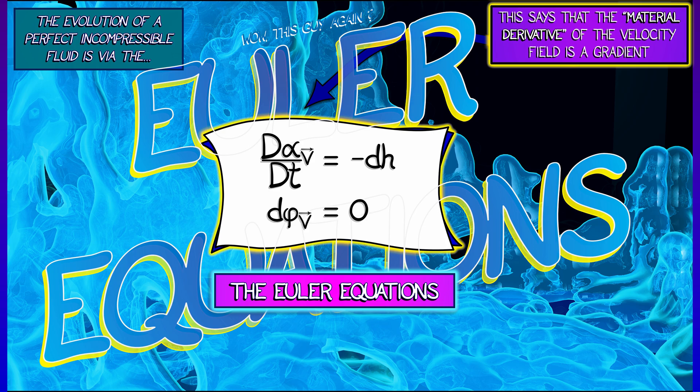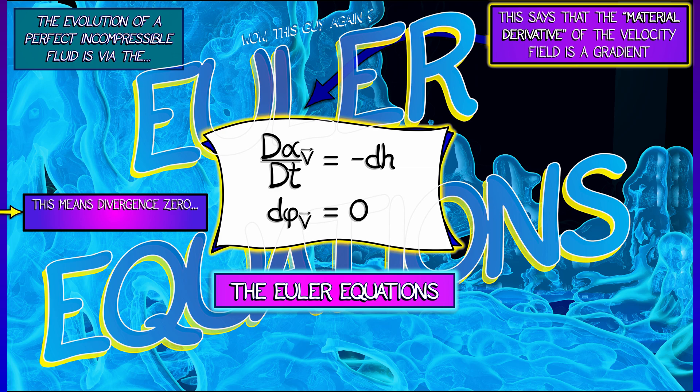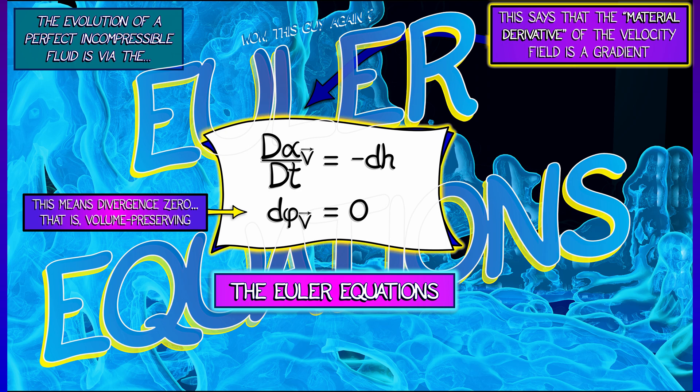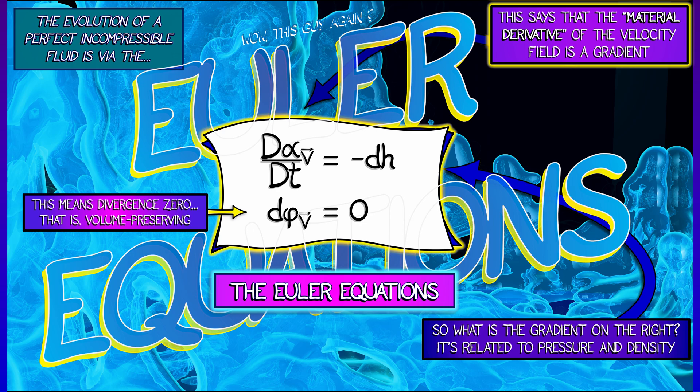The second part of the Euler equation says that the flux two form field, phi sub v, has derivative equal to zero. That means that the divergence vanishes, that this is a volume preserving fluid. Okay, those are the two components of the Euler equations. And we still don't have a good feel for what that gradient on the right is. It does have a precise meaning in terms of pressure in terms of density. But that's physics, we're not going to go there, we're not going to talk about it.